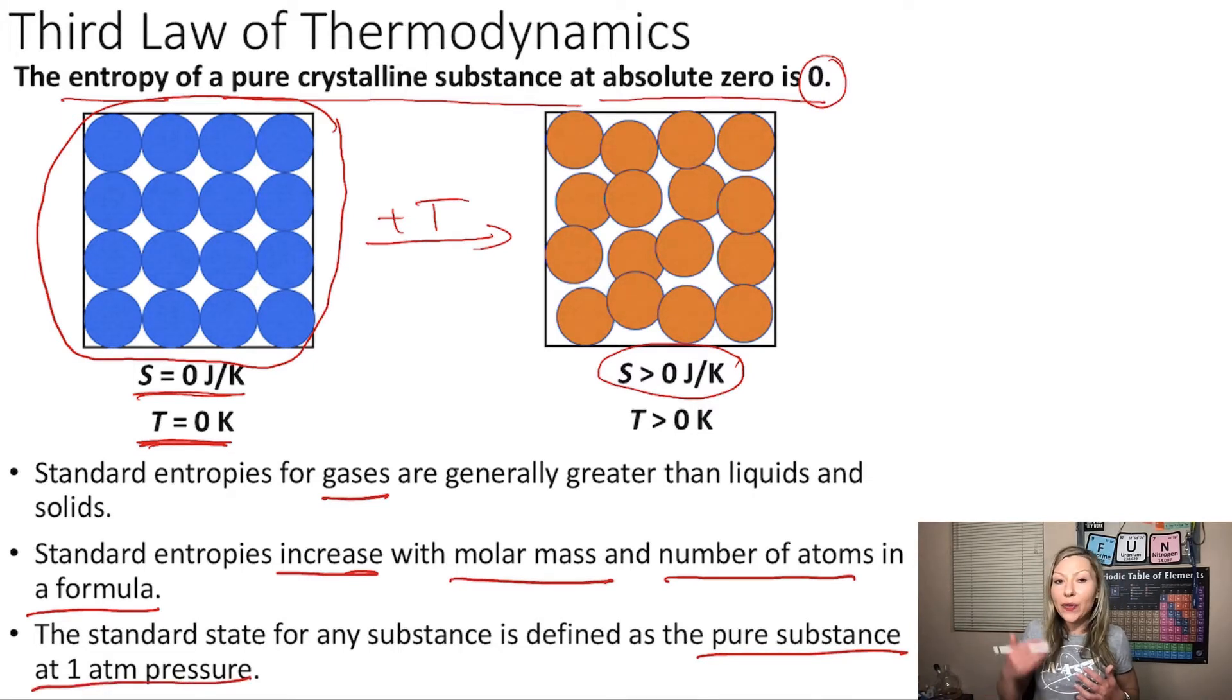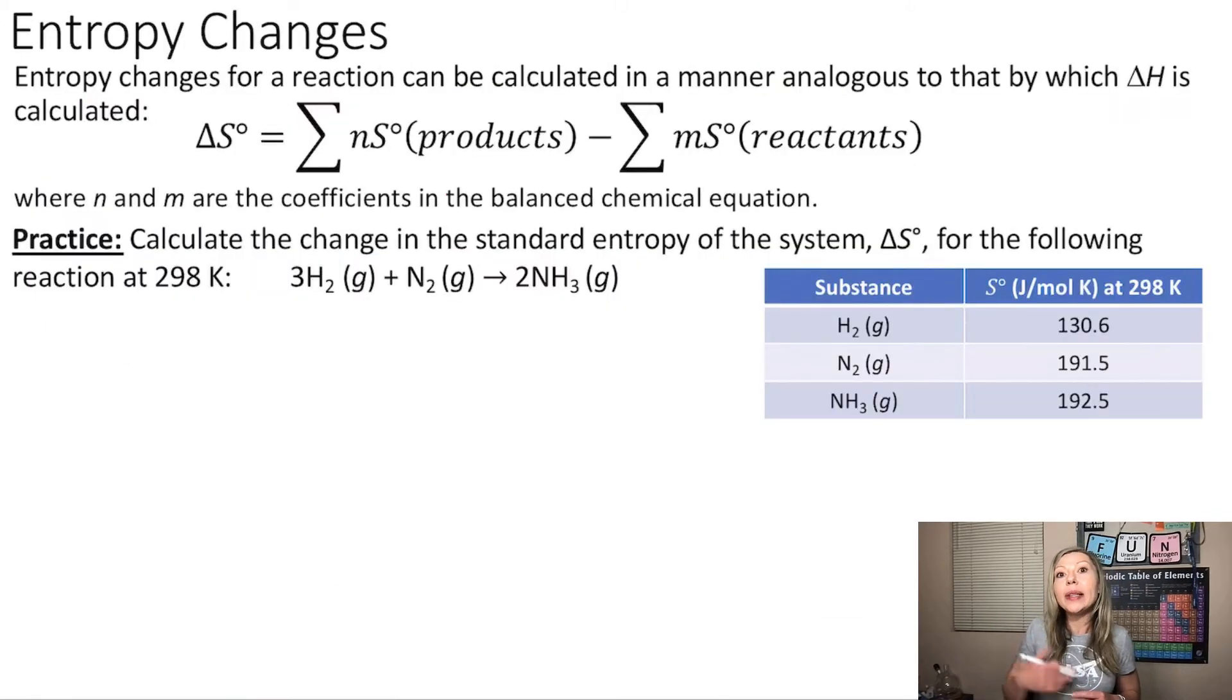Now what's cool about the change in entropy under standard conditions is that it can be calculated similarly to enthalpy. So for a reaction, the standard change in entropy equals to the standard entropy of the products multiplied by the number of moles from the reaction minus the standard entropy of the reactants multiplied by the number of moles from the reaction.